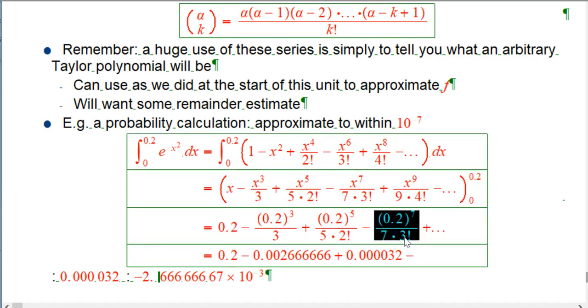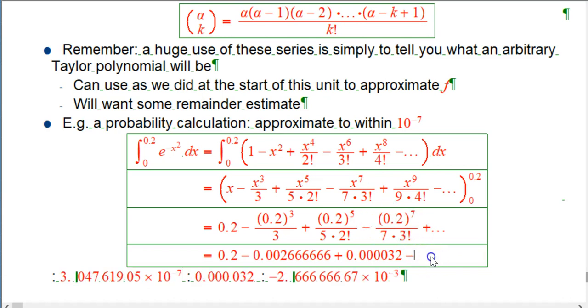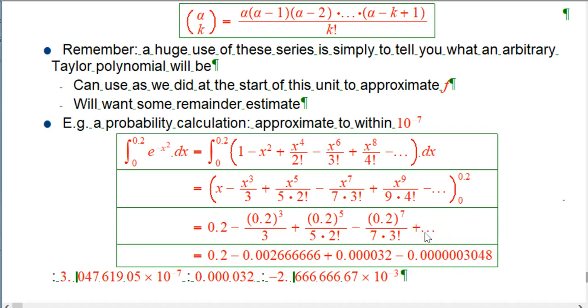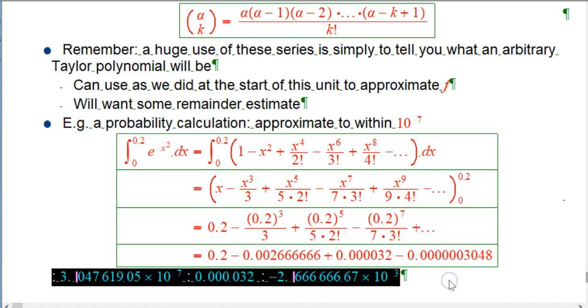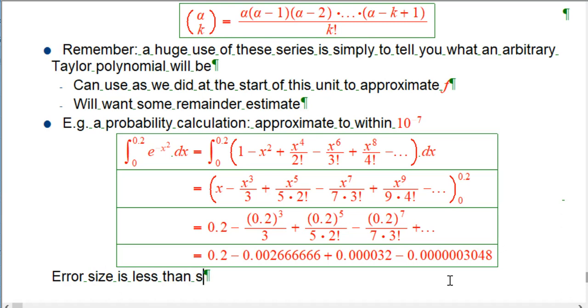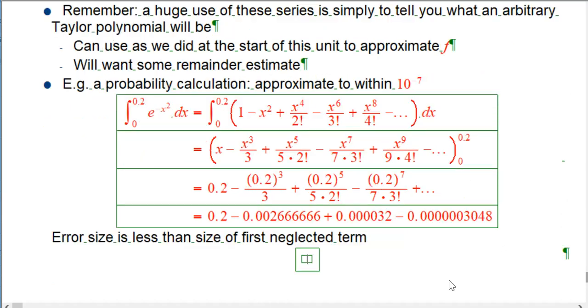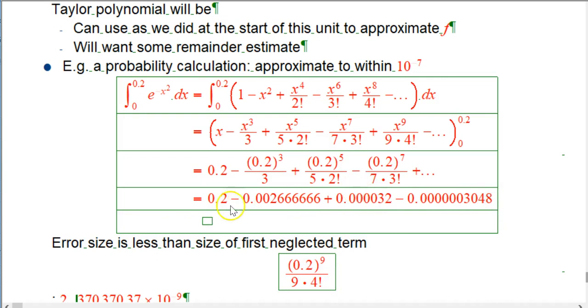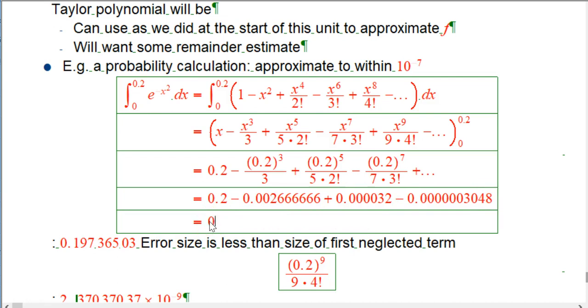That's not less than 10 to the minus seven, but let's add that in. And then the next one, so we did really need one more to get the error estimate. So the error estimate, error size is less than the size of the first neglected term. And that's going to be this with a 0.2 plugged in. And that's way less than 10 to the minus seventh. So this is going to be good enough, and we'll just put that together. And we get, and if you have a numerical integration routine on the calculator, you can verify that this is to, at least to within 10 to the minus seventh, a little better. That's what it's going to give you.